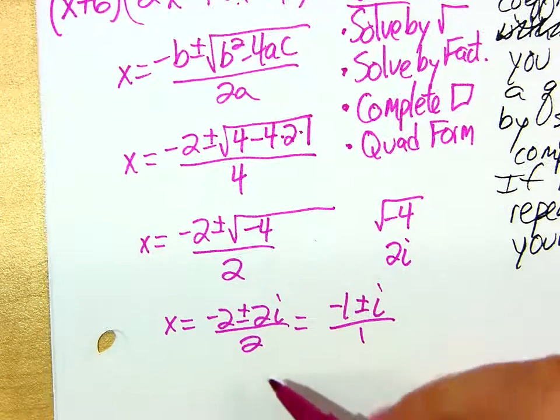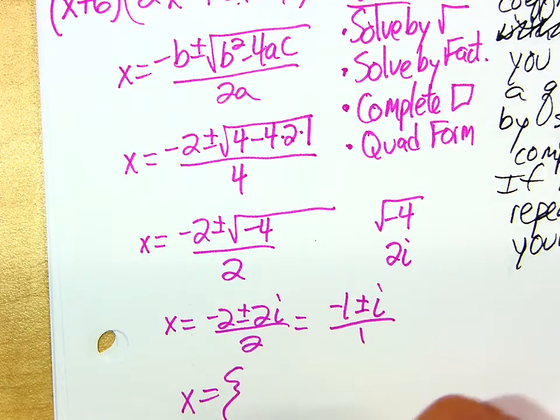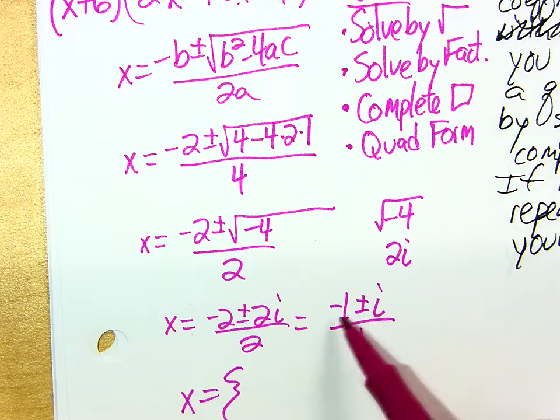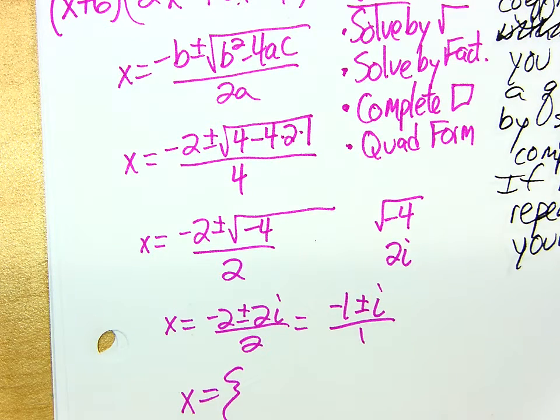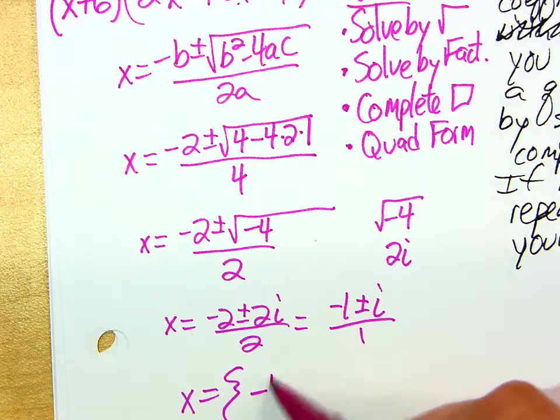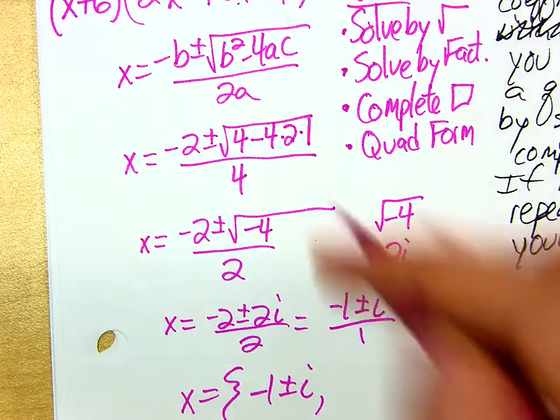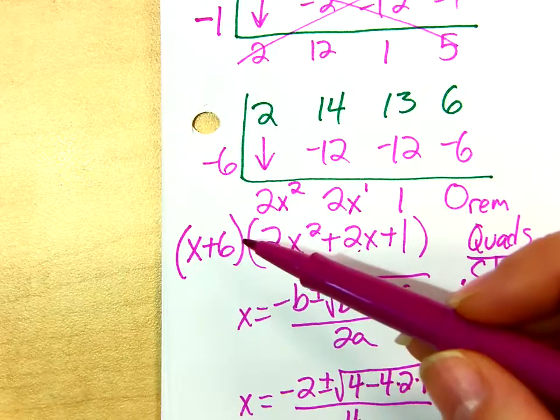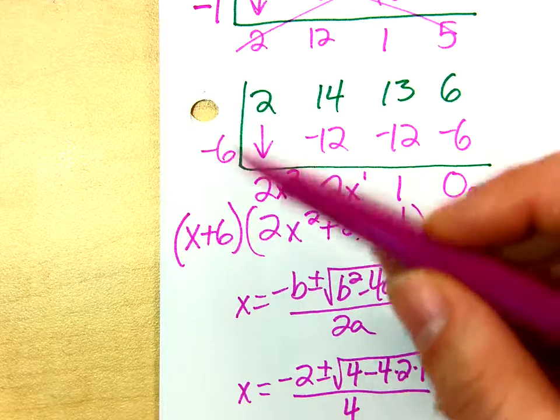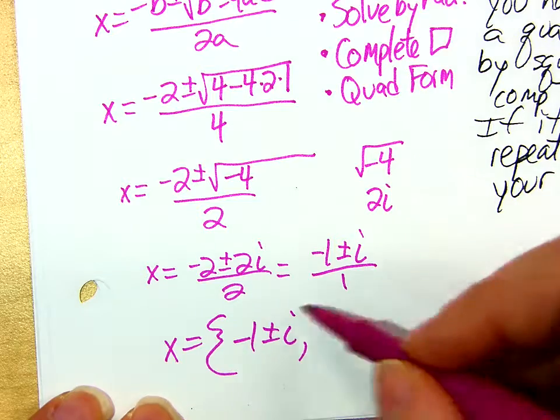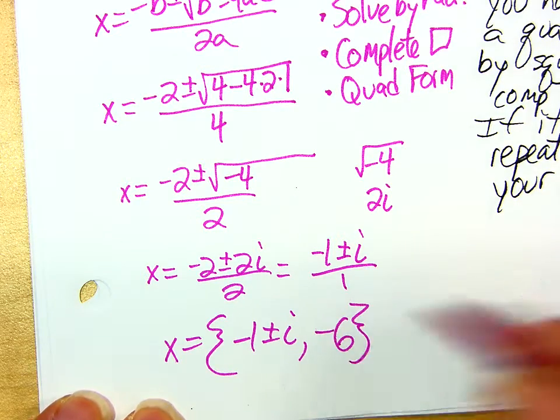So now when I go to write my final answer, remember there was supposed to be 3 of them. This is 2 of them, right? It's -1+i and -1-i. That counts for 2 answers. -1 ± i. I don't need to divide by 1 because it's just a 1. Where's the third answer? The -6 that I found from the beginning, or not from the beginning, but early on. I found that -6 was a zero, so that goes in also, negative 6.